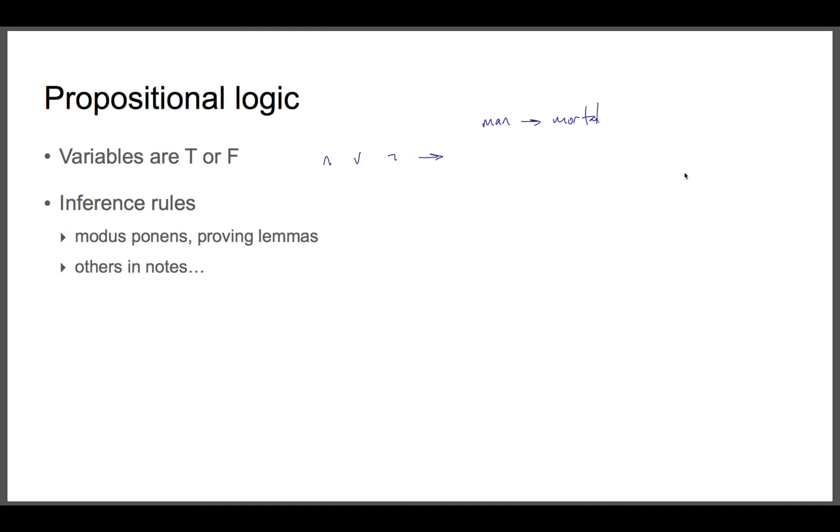Another good one is proving a lemma. In order to prove a lemma, you make some assumptions, you show that they imply a conclusion in a number of steps, and then at the end you conclude that those assumptions imply that conclusion.